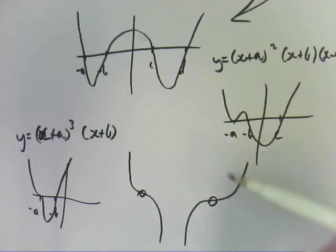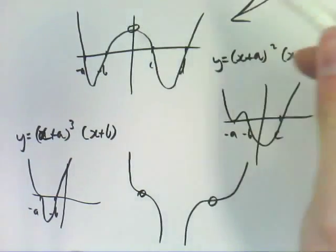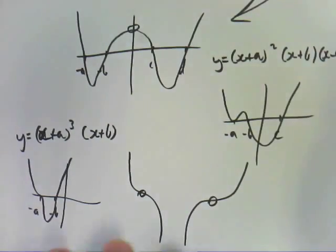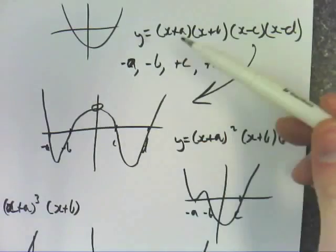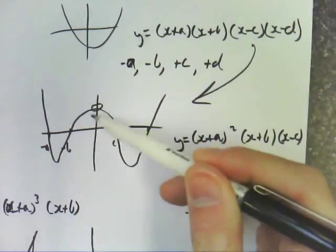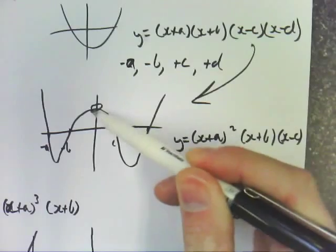When you are graphing them, you do need to find the y-intercept as well. To do that, for that particular example there, you would just do a times b times negative c times negative d, and that will give you that y-intercept there.